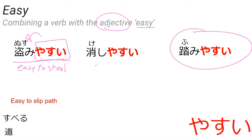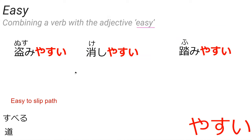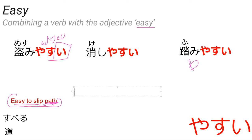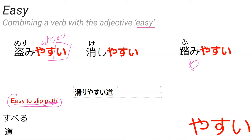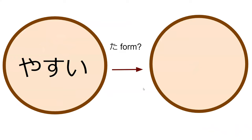What do you think fumi yasui means? Easy to step on — exactly. So how would you say easy to slip? A path that is easy to slip on? Yasui is an i-adjective, so it's an adjective. So it would be suberi yasui michi — yes, that's exactly what you say. Suberi yasui michi — the path that's easy to slip on. What do you think the ta-form of yasui is? Yasukata — yes, yasukata.